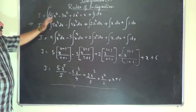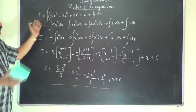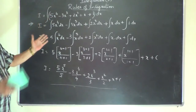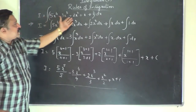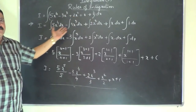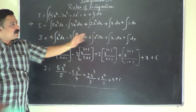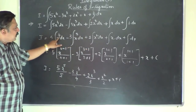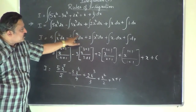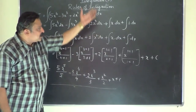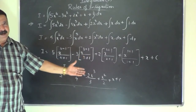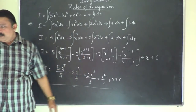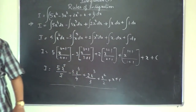So if many functions are present together for addition or subtraction — sum or difference — just separate them, take all constants outside, and if you have powers associated with the function use the power rule to write the answer.